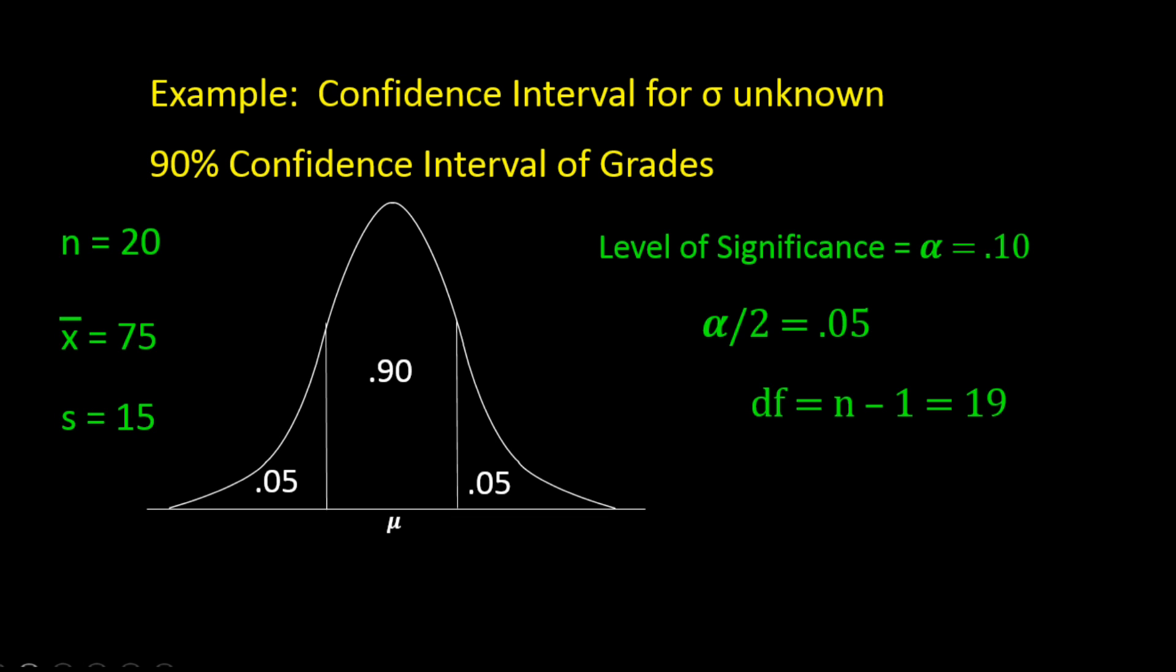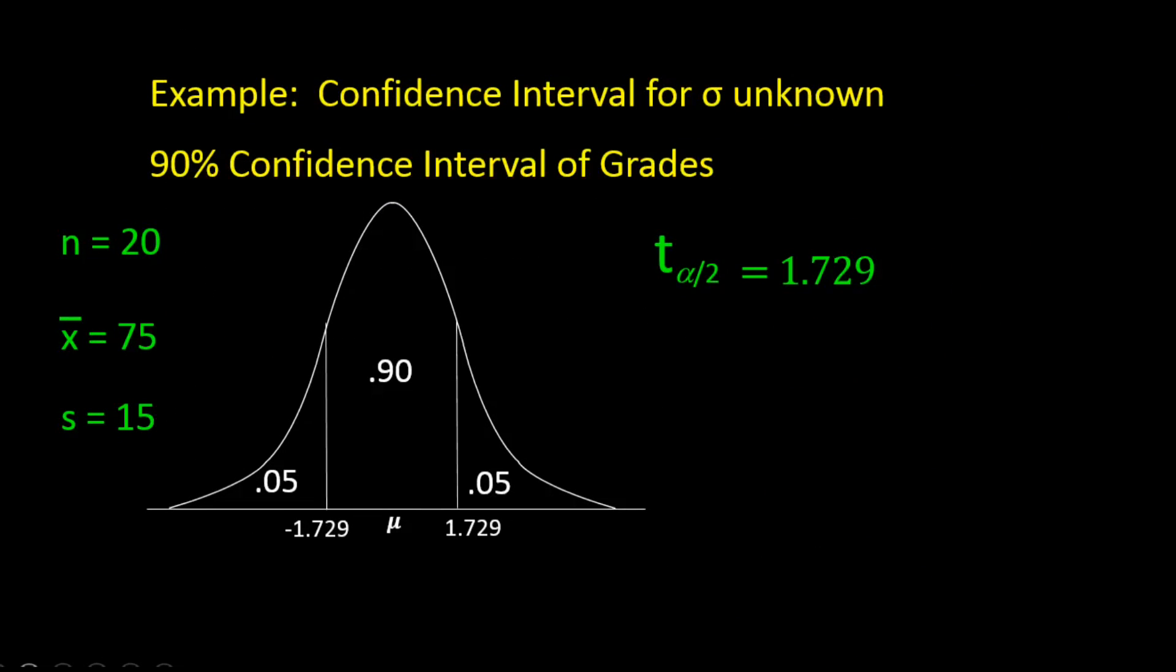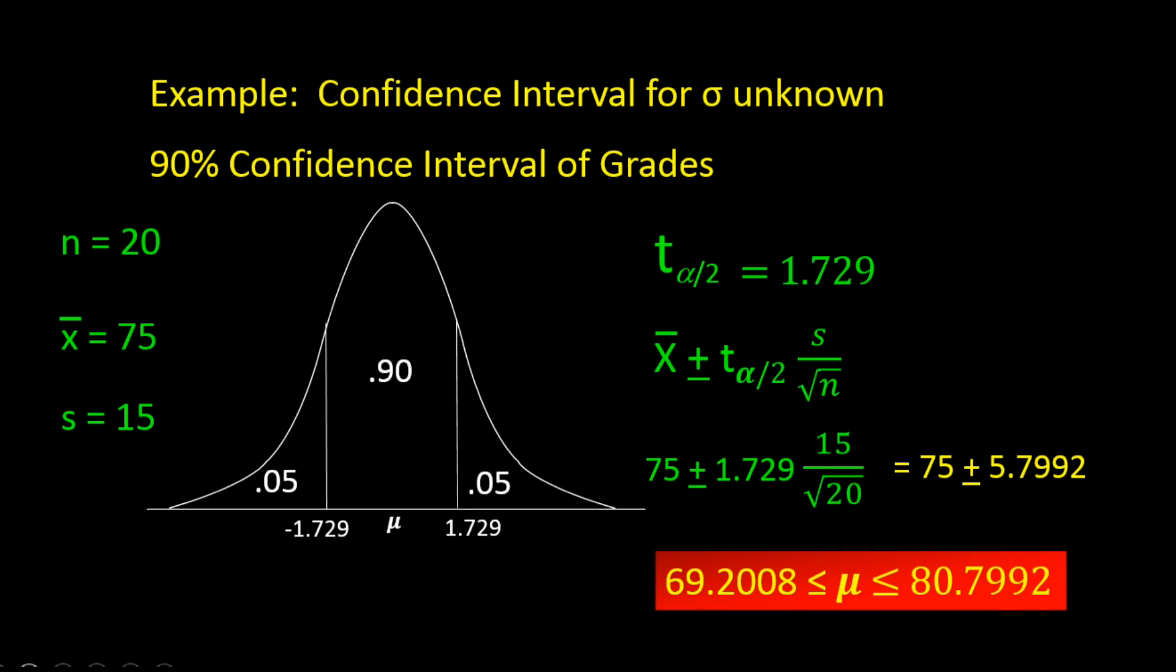So let's look up in the t table alpha divided in half, 0.05, and degrees of freedom, 19, and we get 1.729. So now we are ready to calculate the confidence interval estimate for the mean. Using the formula x bar plus and minus T times S over the square root of n, we get 75 plus and minus 1.729 times 15 divided by the square root of 20, which gives us 75 plus and minus 5.7992. And that gives us a 90% confidence interval on the mean of between 69.2008 and 80.7992.